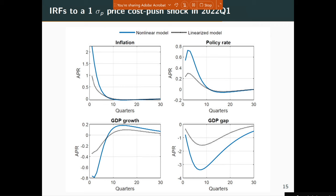We filter the data with our nonlinear model up to Q1 2022, then impose a one-standard-deviation price cost-push shock — think the energy price explosion at a lower scale. The nonlinear model predicts that inflation goes up by twice as much as the linear version: while the linearized model says inflation goes up one percent, the nonlinear model predicts two or even two-and-a-quarter percent. Notably, that high inflation occurs even though policy is much more aggressive in the nonlinear model than in the linearized model.